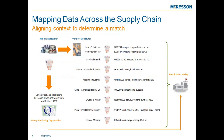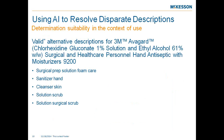Here's an illustrative example around content. If I take a single item at the manufacturer and GPO level — surgical hand scrub, a pretty commodity-based item — when we push that item out to hospitals, in this particular example, we have nine different vendors, ten different descriptions, and ten different catalog numbers for the exact same item. Every single one of those descriptions and catalog numbers is a valid way for an end user to try to find that particular item.